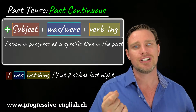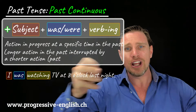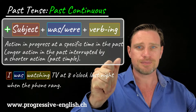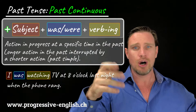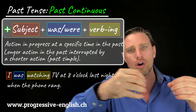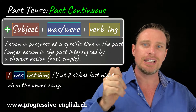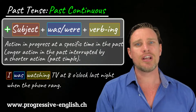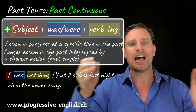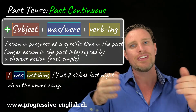We often use this structure to show a longer action that was in progress in the past, and during that long action another shorter action happened. For example: I was watching TV last night when the phone rang. The longer action uses the past continuous — I was watching TV — and the shorter action uses the past simple — the phone rang. We often use the words 'while' or 'when' to link the two actions. We call that the interrupted past continuous.